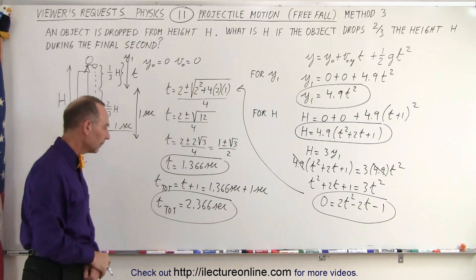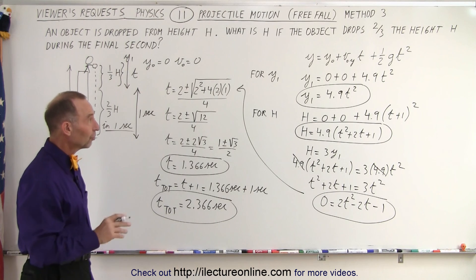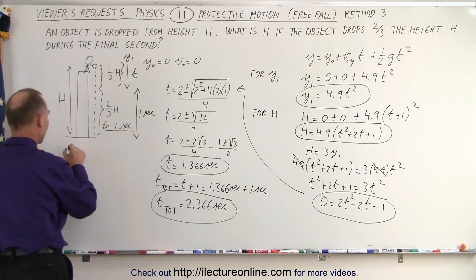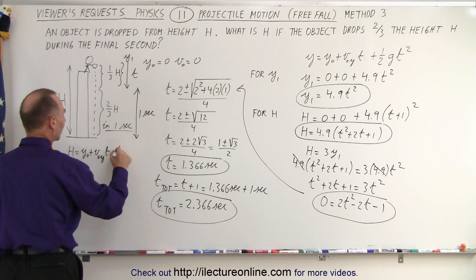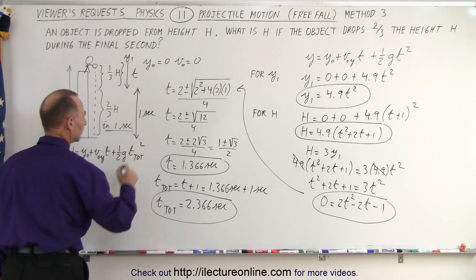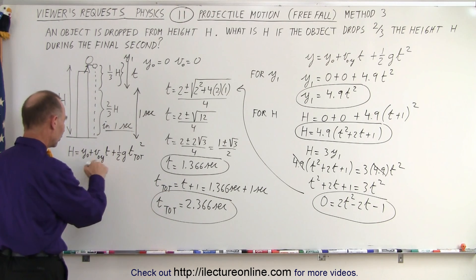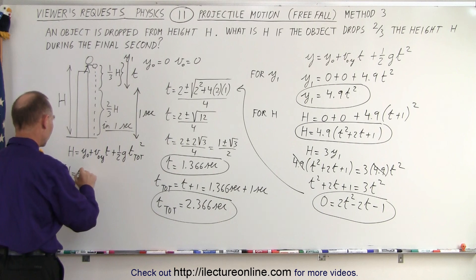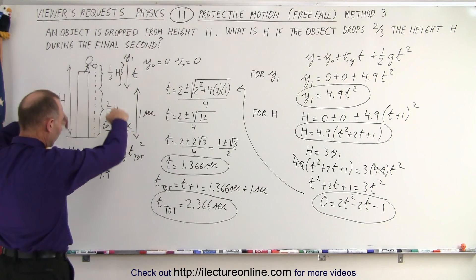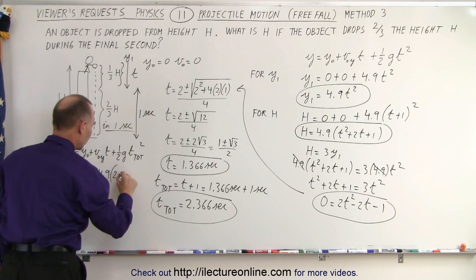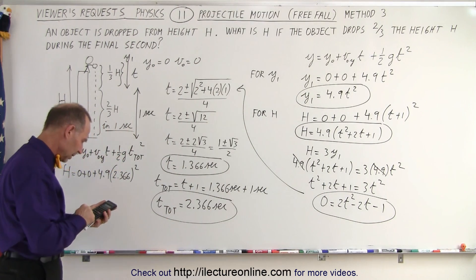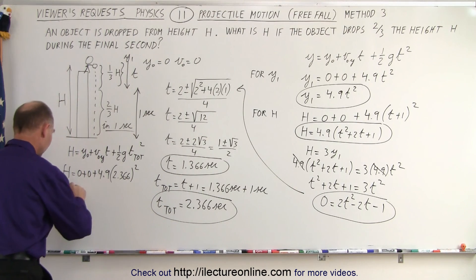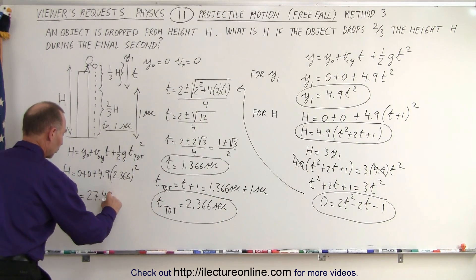Now that we have the total time, we can find the total distance. Using the kinematics equation again, with y-initial and v-initial both equal to zero, h equals 4.9 times (2.366) squared. Squaring 2.366 and multiplying by 4.9 gives h equals 27.43 meters.